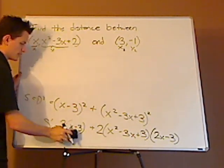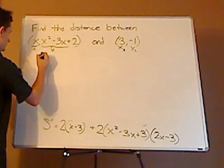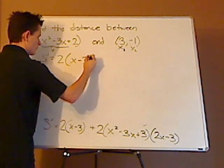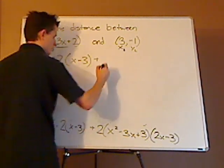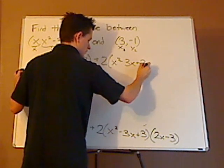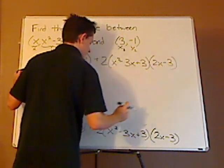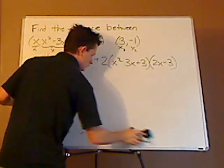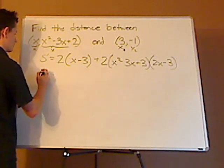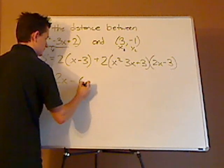And what I'm going to be doing is I'm going to be simplifying this. So let me rewrite it. So it's s prime equals 2 parentheses x minus 3 plus 2x squared minus 3x plus 3, 2x minus 3. You just want to simplify this. So this is s prime. This is 2x minus 6 plus...